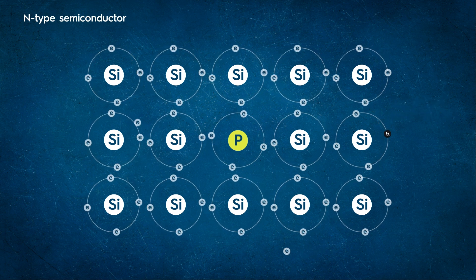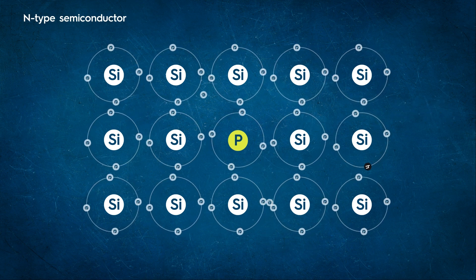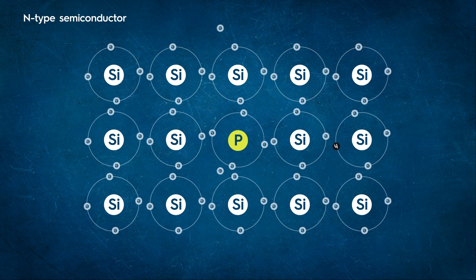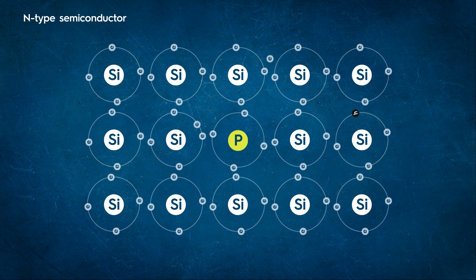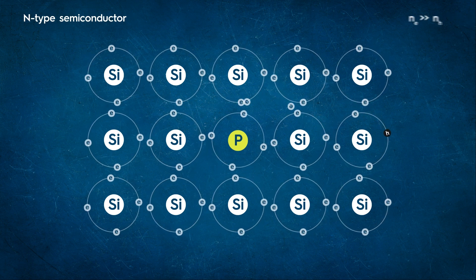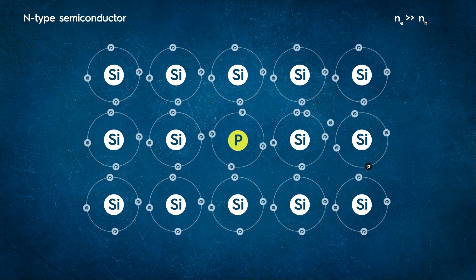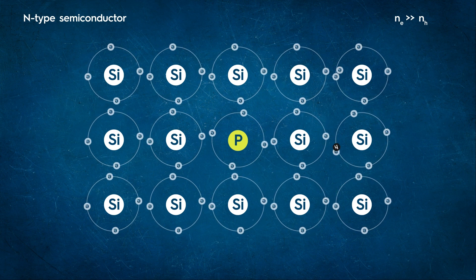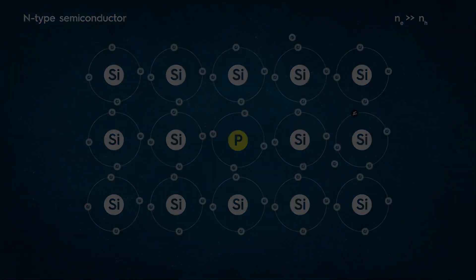By changing the level of doping, we can change the number of conduction electrons. Hence, in an extrinsic semiconductor doped with pentavalent impurity, electrons become the majority carriers and holes become the minority carriers. These are called n-type semiconductors.